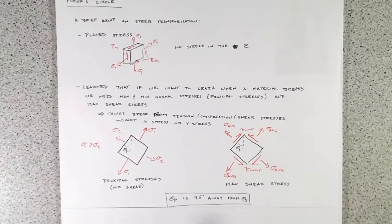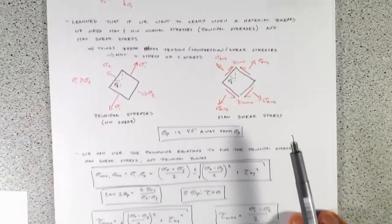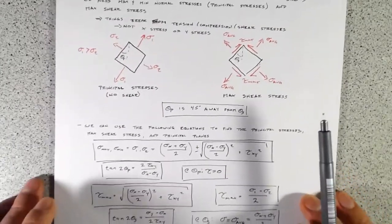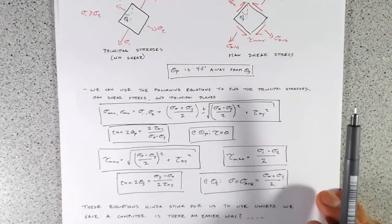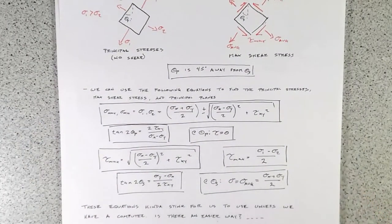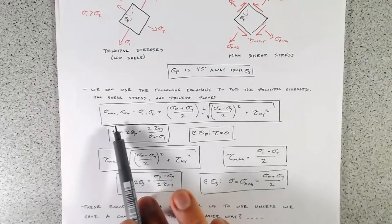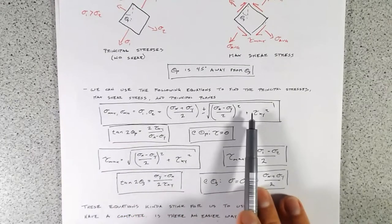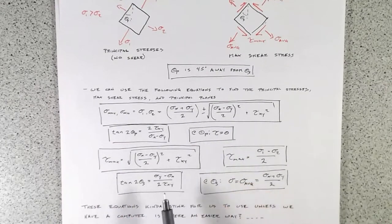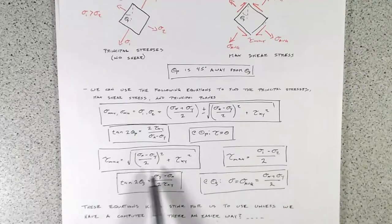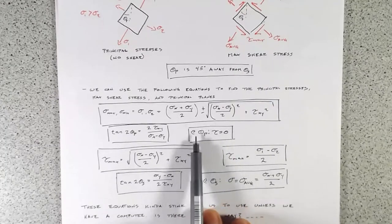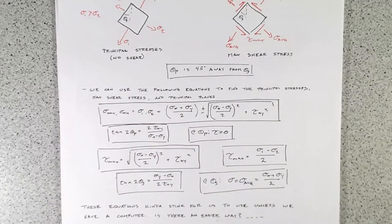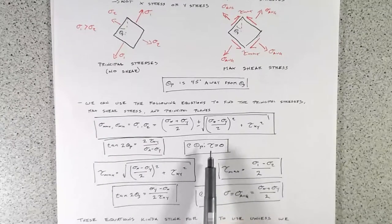And when we've got max shear stress, the normal stress acting on it is really the average between x and y. We also found out that the angle of our principal strain is 45 degrees away from the angle at which our maximum shear stress occurs. We learned all of that with a whole series of equations.